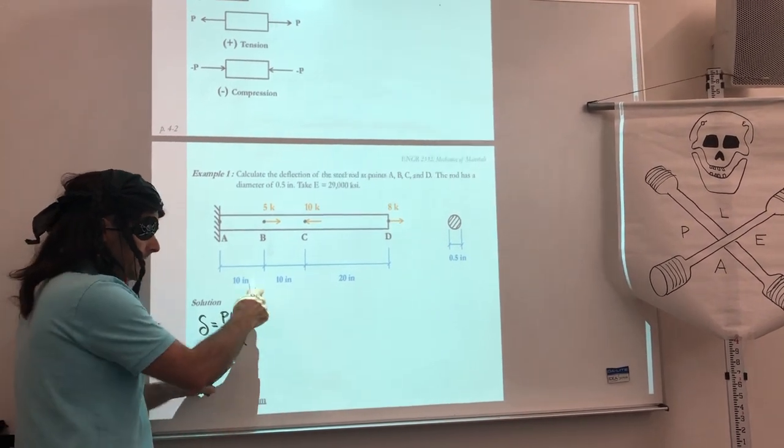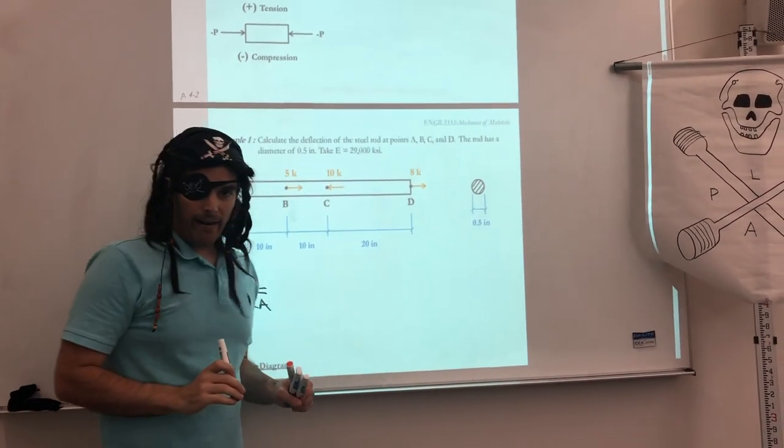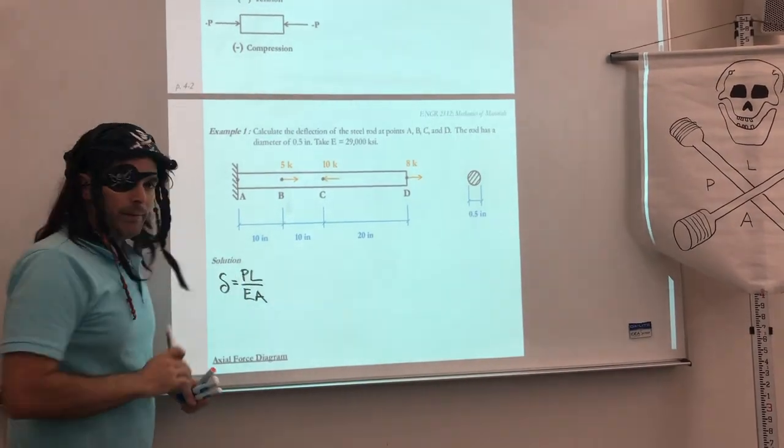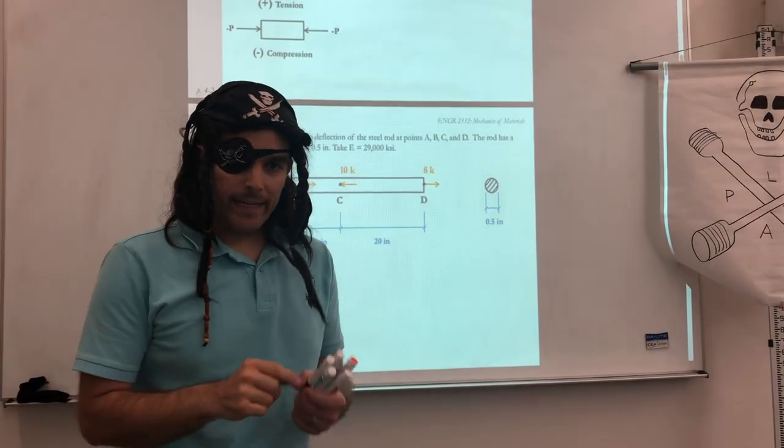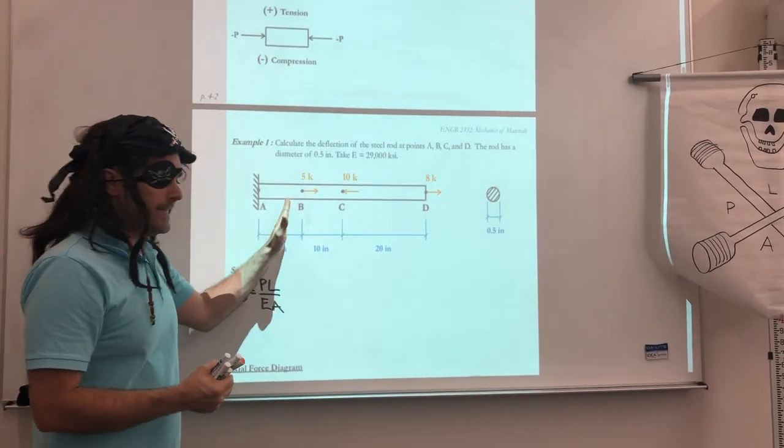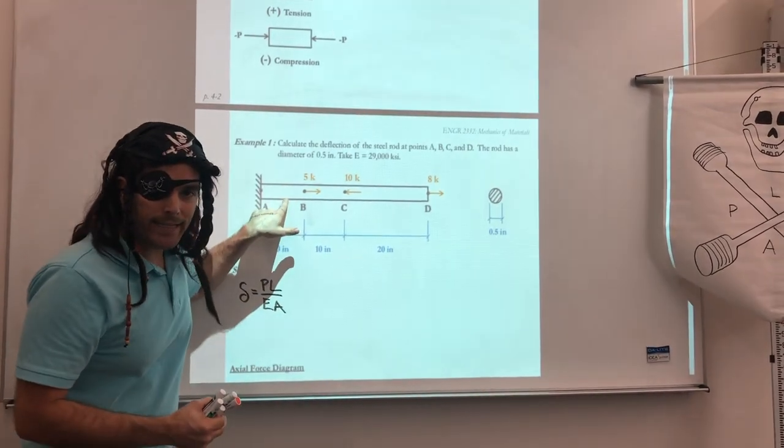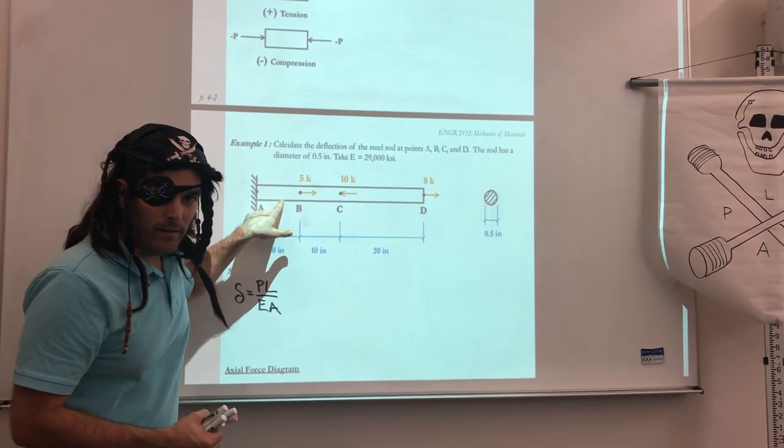So we know delta equals PL over EA. So we have information about the length, modulus of elasticity, and of course the area. But how do we solve for P? So P is going to be our axial force at any given point along the member. So let's start here in segment AB. What is the axial force in AB?